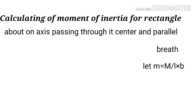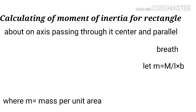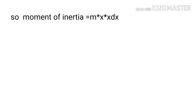For a rectangular lamina, passing through the center: let small m be the mass per unit area, capital M be the mass of the body, l be the length, and b be the width. Mass per unit area equals M divided by l into b. The moment of inertia of the right angle equals M into l squared by 12.